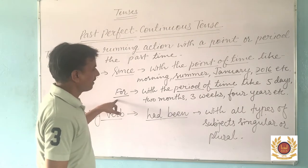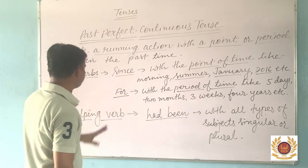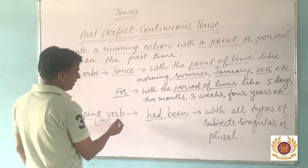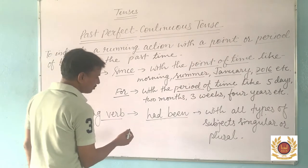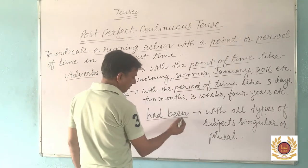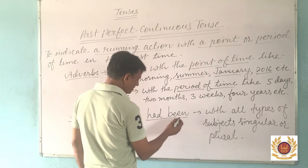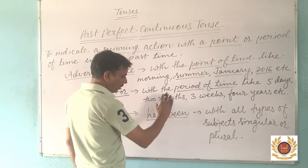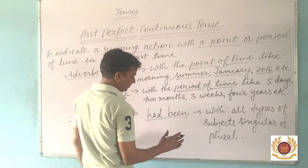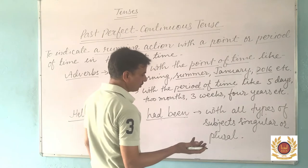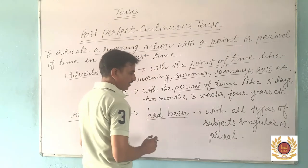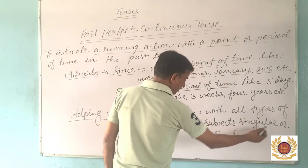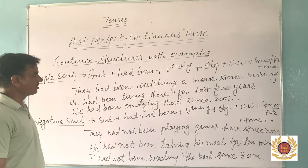Now the helping verb. In Past Perfect Continuous Tense, there is only one kind of helping verb — 'had been'. We use 'had been' as the helping verb with all types of subjects, whether they are singular or plural.